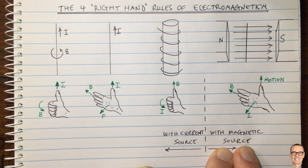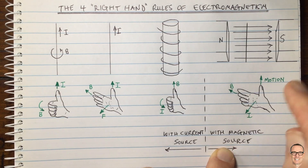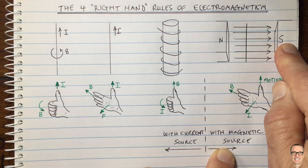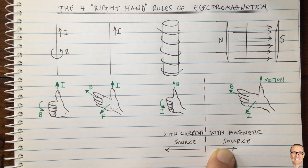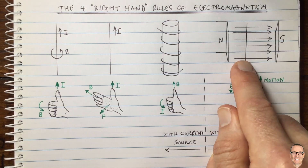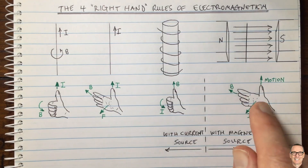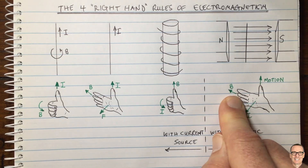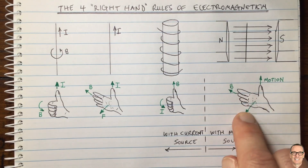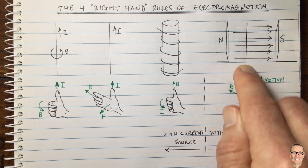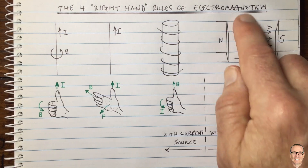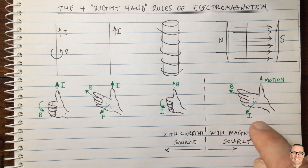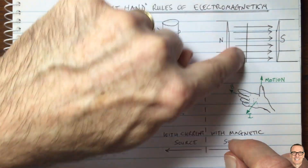The fourth rule applies when there is a magnetic source and the current is the thing that's induced. Here you have a north magnet and a south magnet with magnetic field lines between them, and a wire placed between those magnets. If we move that wire vertically upward, you use this right-hand rule: the thumb is in the direction of motion, the open fingers are in the direction of the magnetic field, and the palm shows the direction of the induced current in that wire — or, if the wire is not in a loop, the direction of the voltage difference between its ends.